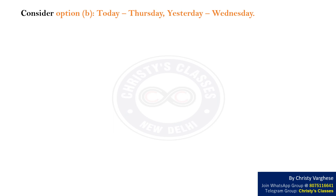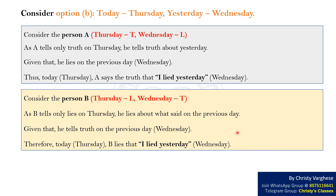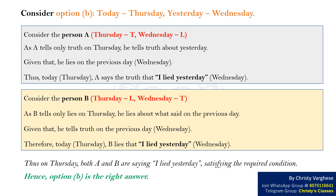Consider option B, which tells that today is Thursday — then yesterday was Wednesday. Consider person A: he tells the truth on Thursday and lies on Wednesday. As A tells only truth on Thursday, he tells truth about yesterday. Given that he lies on the previous day, today A says the truth that 'I lied yesterday.' Consider person B: he lies on Thursday and speaks only truth on Wednesday. As B tells only lies on Thursday, he lies about what he said on the previous day. Given that he tells truth on the previous day, today B lies that 'I lied yesterday.' Thus, on Thursday, both A and B are saying 'I lied yesterday,' satisfying the required condition. Hence, option B is the right answer.